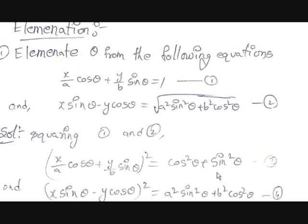The second equation squared becomes (x·sinθ − y·cosθ)² = A²sin²θ + B²cos²θ, since the square root cancels out. Let these be equations 3 and 4 respectively.